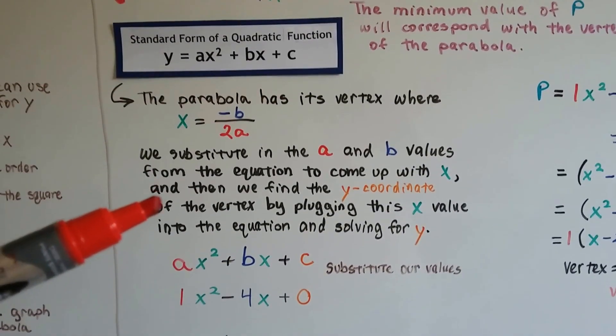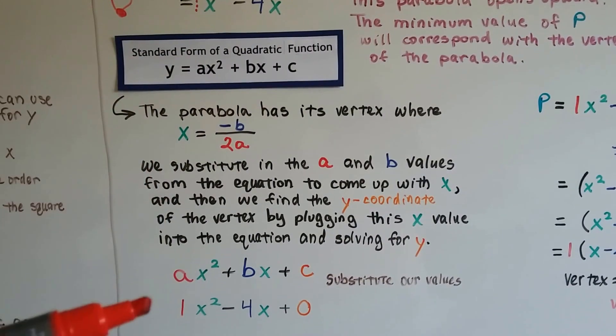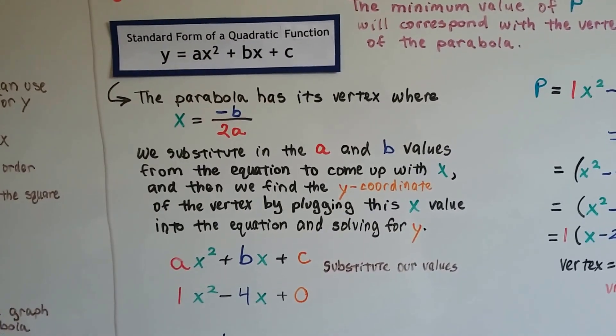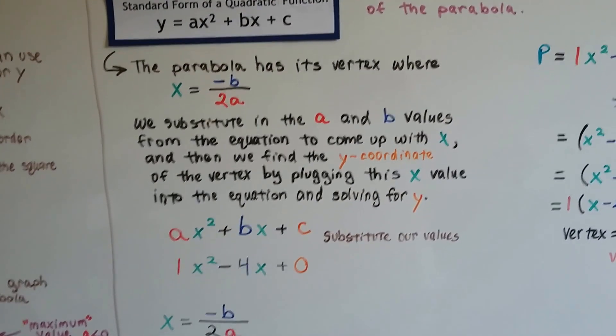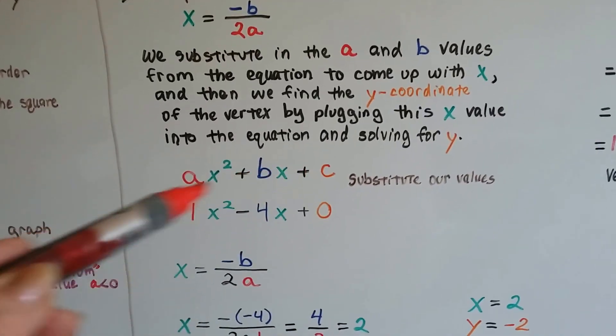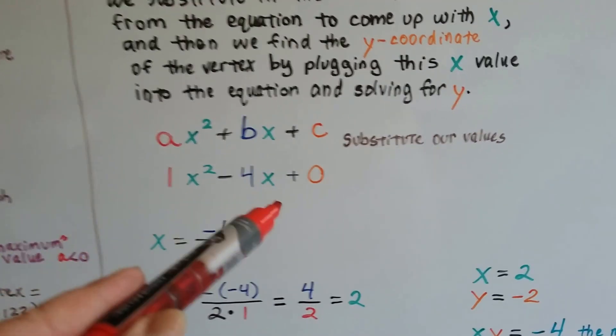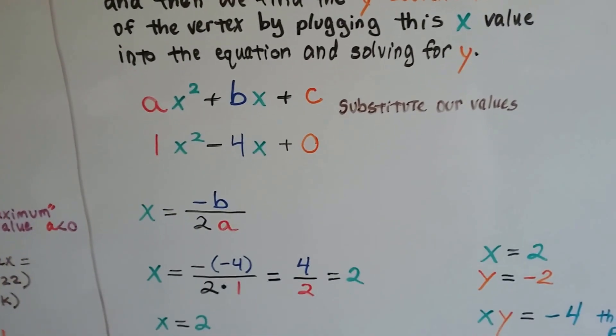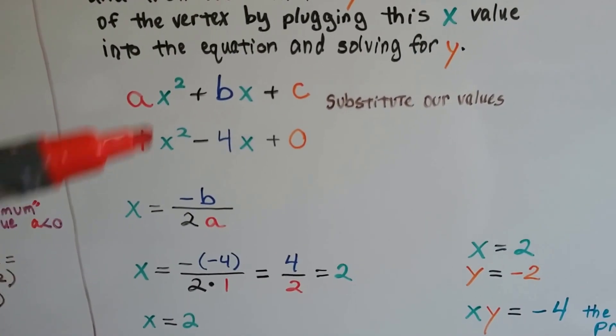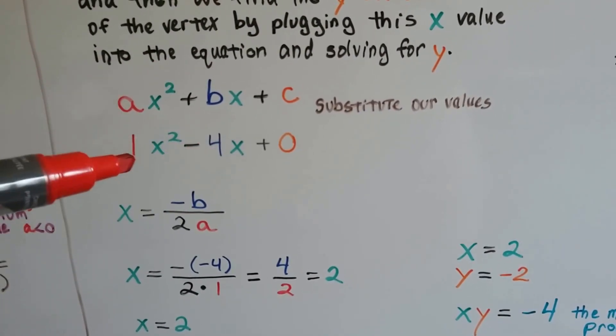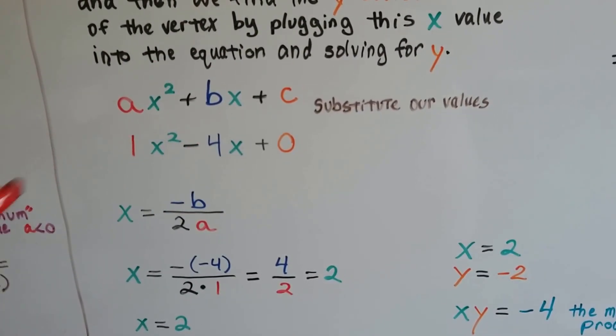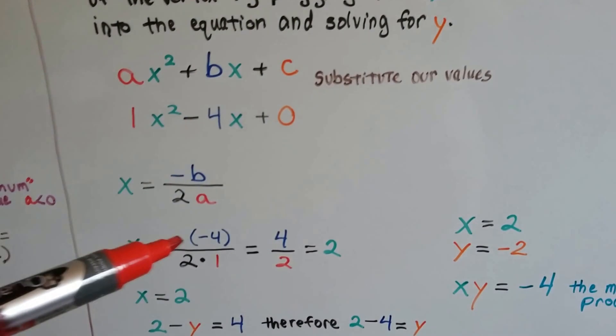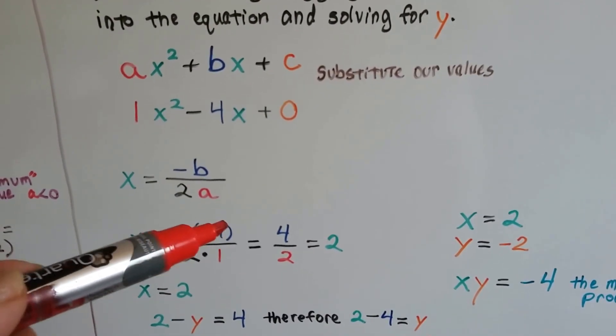We can substitute the a and b values from our equation and come up with x. Then we find the y-coordinate of the vertex by plugging this x value into the equation and solving for y. Here's our values, and I put a +0 at the end for c, just so it was complete. Here's our b value, -4, and our a value is 1.